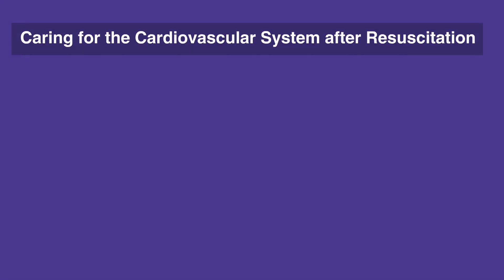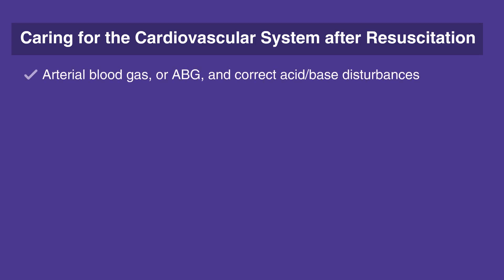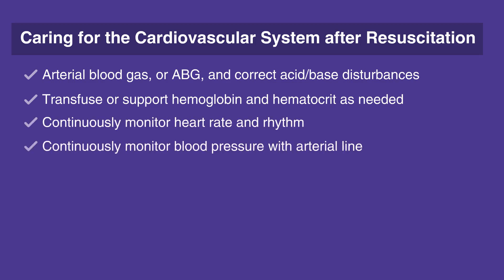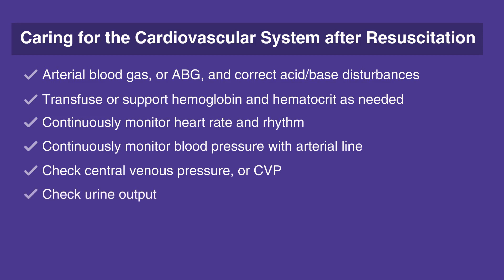When caring for the cardiovascular system after resuscitation, follow this checklist. Arterial blood gas, or ABG, and correct acid-base disturbances. Transfuse or support hemoglobin and hematocrit as needed. Continuously monitor heart rate and rhythm. Continuously monitor blood pressure with arterial line. Check central venous pressure, or CVP. Check urine output. Chest x-ray. 12-lead ECG. Consider echocardiography.